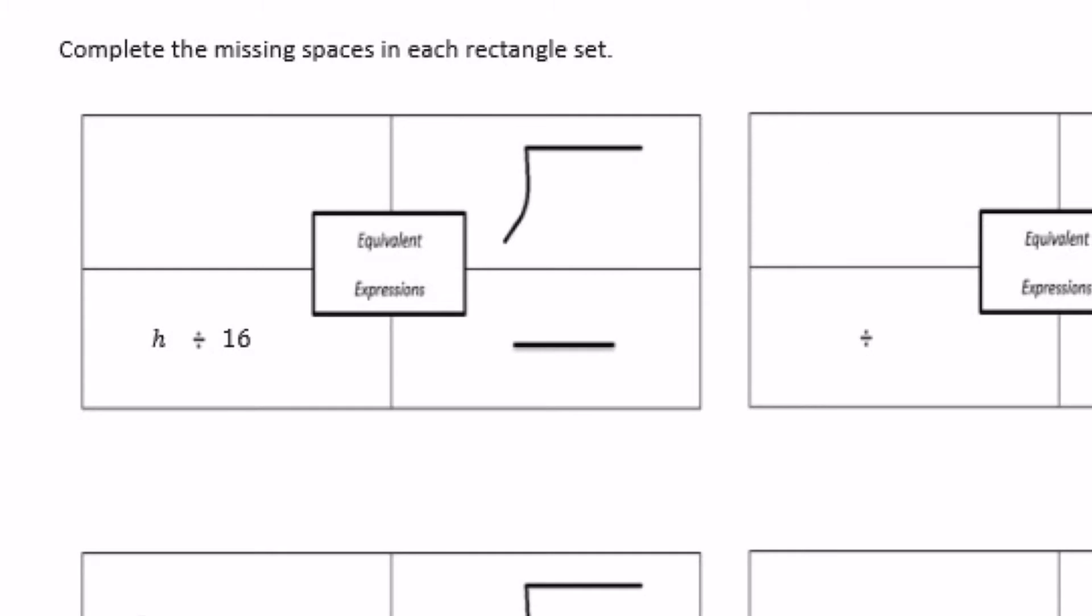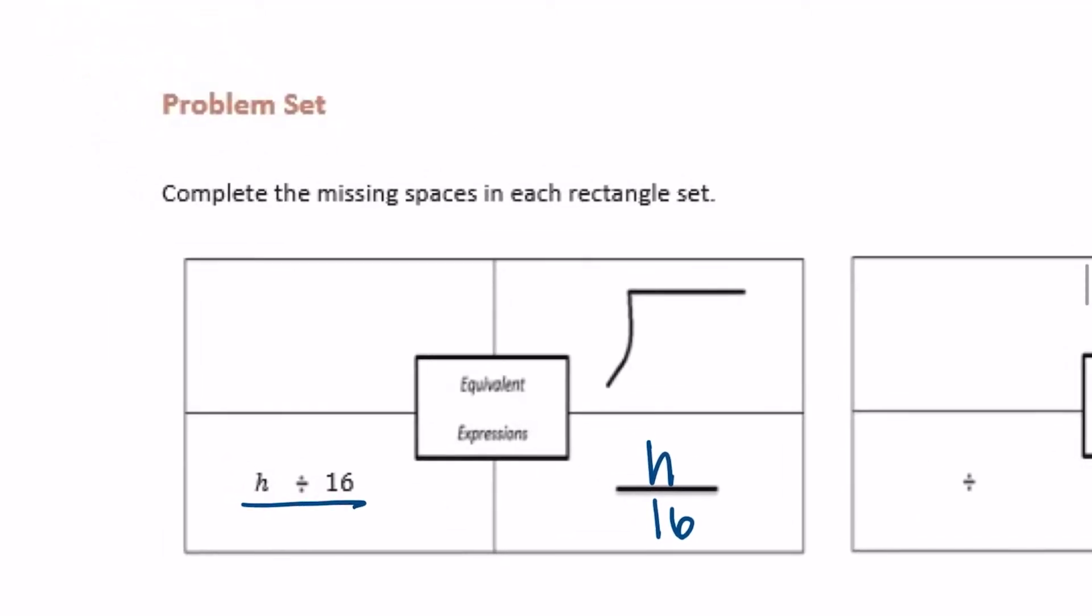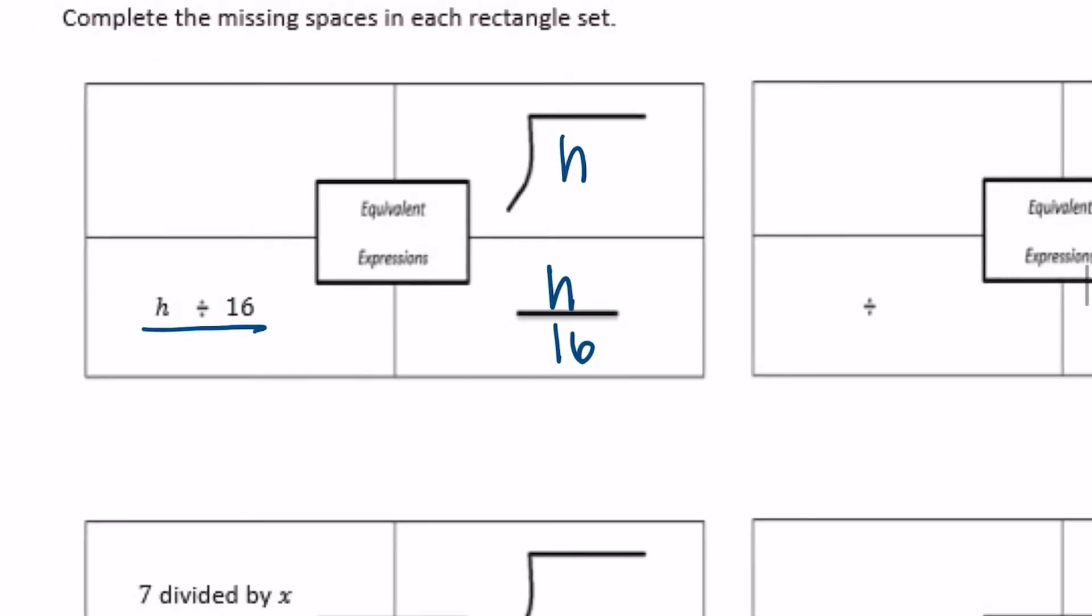They've given us h plus 16, so we need to fill in the other three spaces based on that information. h divided by 16 is the same as h over 16. That says h divided by 16, or you could write it as h divided by 16.